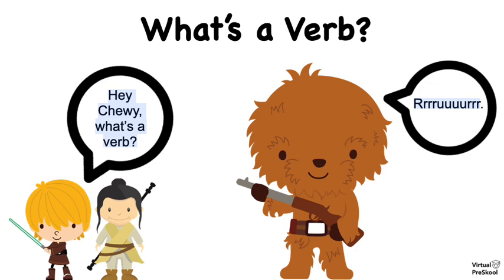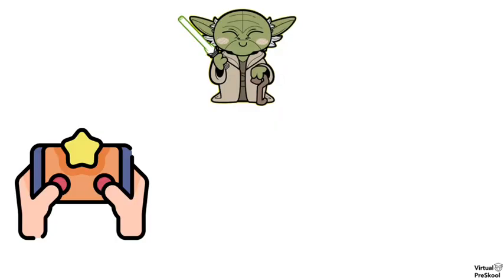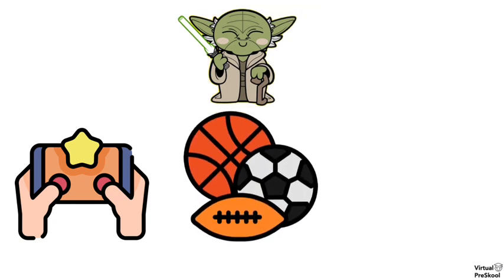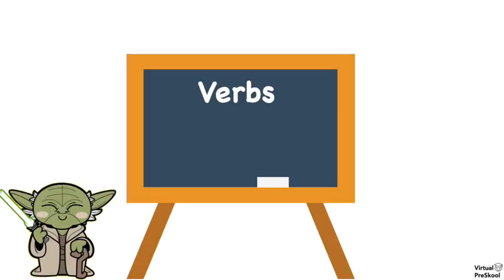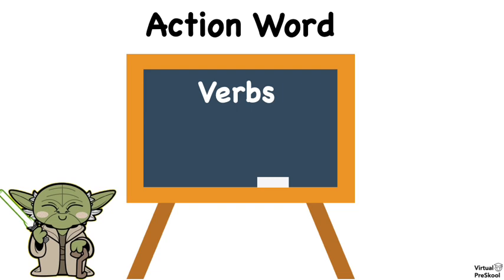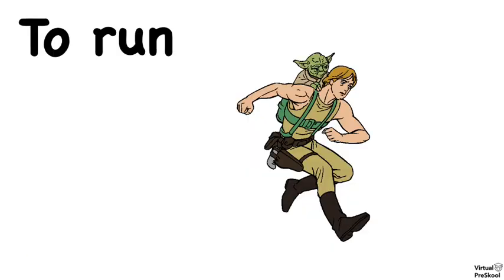So let's start by reviewing what a verb is. You know how there are types of games like video games, sports games, and board games? Well, there are also types of words. A verb is a type of word — an action word. A verb is an action word.